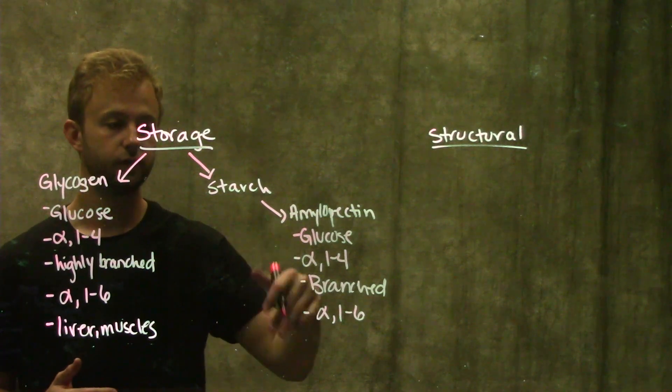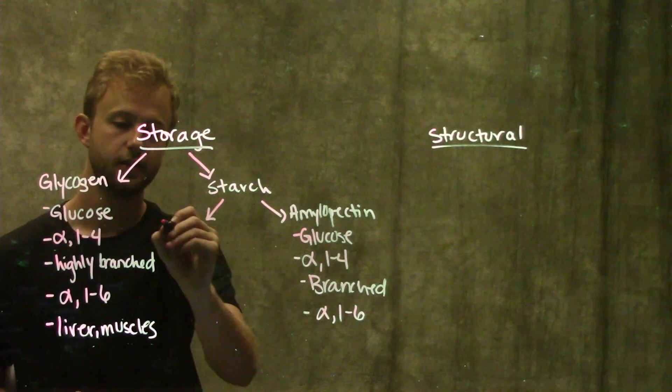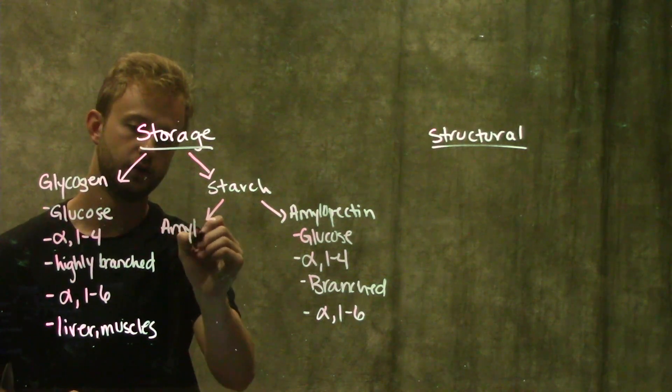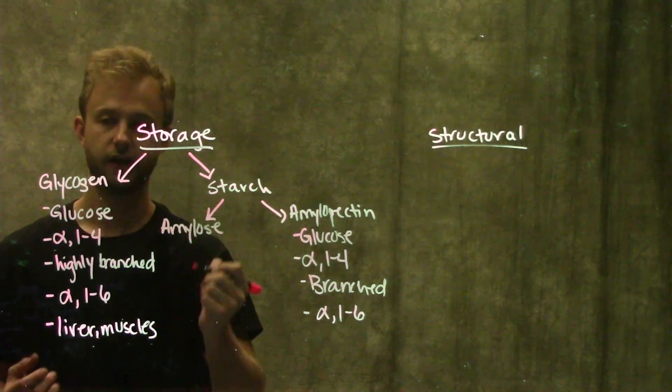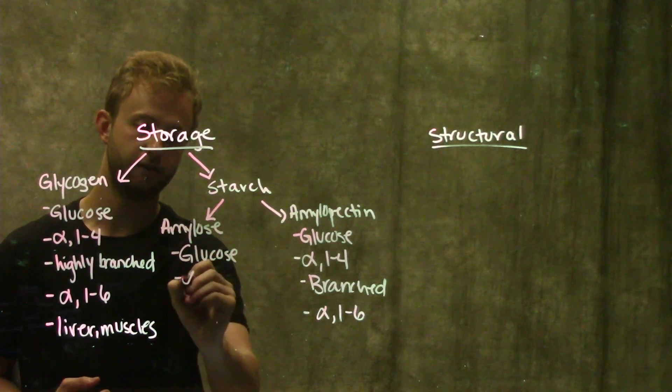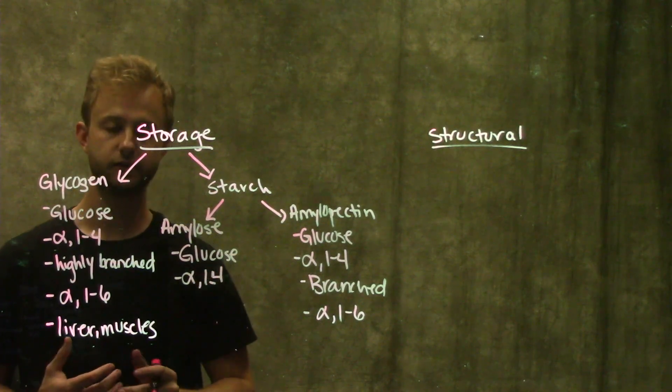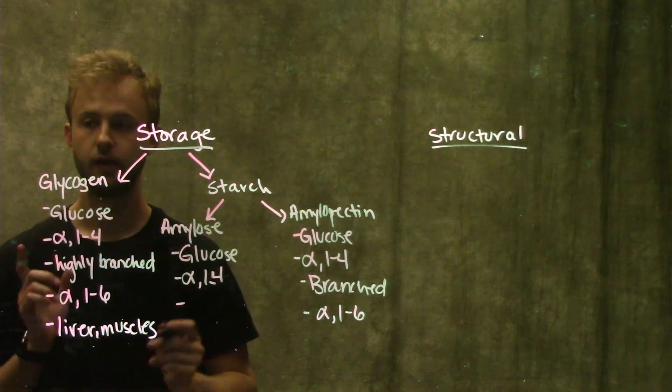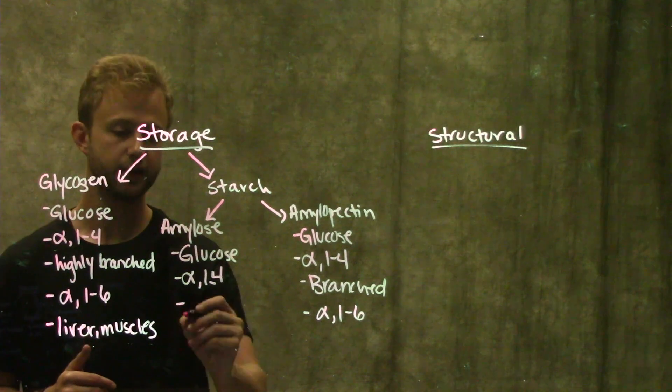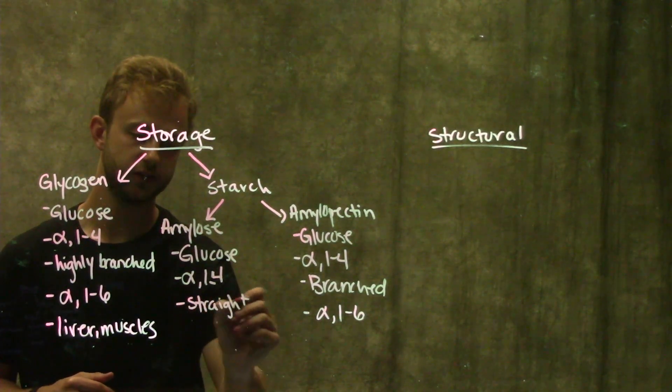Moving on from amylopectin, we'll move to the second kind of starch called amylose. Amylose is made of glucose with alpha 1,4 glycosidic linkages, but unlike glycogen and amylopectin, amylose is a straight chain.